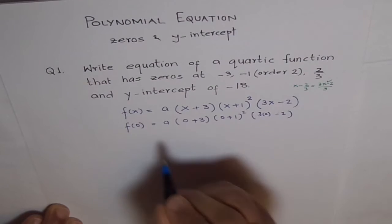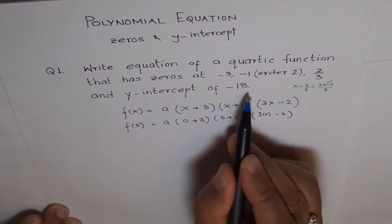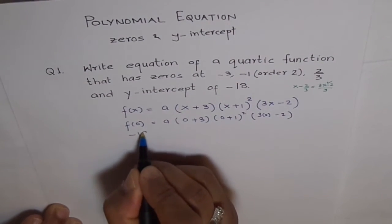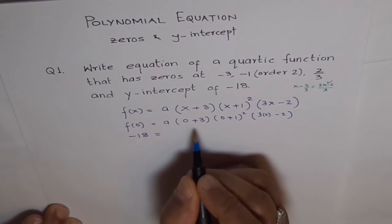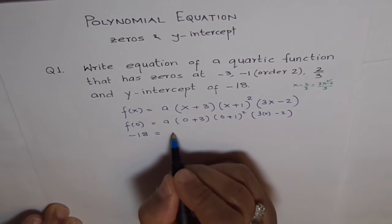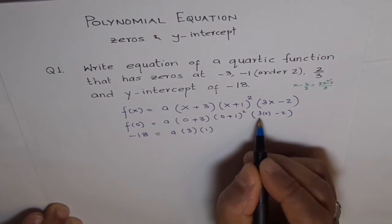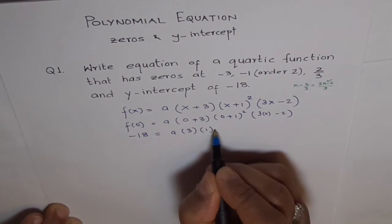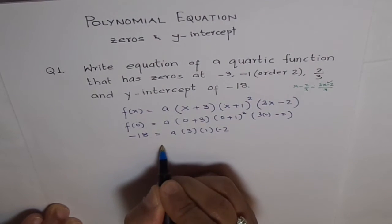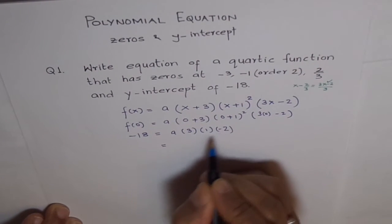And solve for A. f(0) is y-intercept given as minus 18. Minus 18 equals A times 3, 1 squared is 1, and 0 minus 3 is minus 2, which is 3 times 2 is 6.